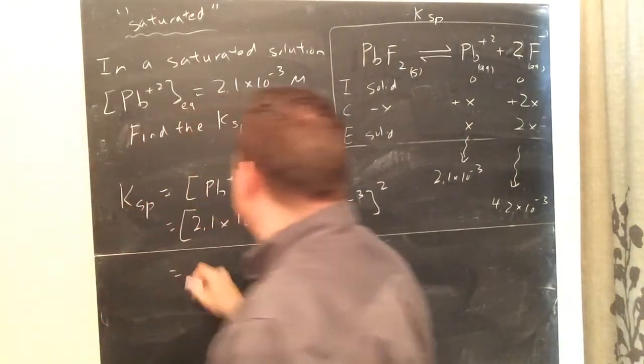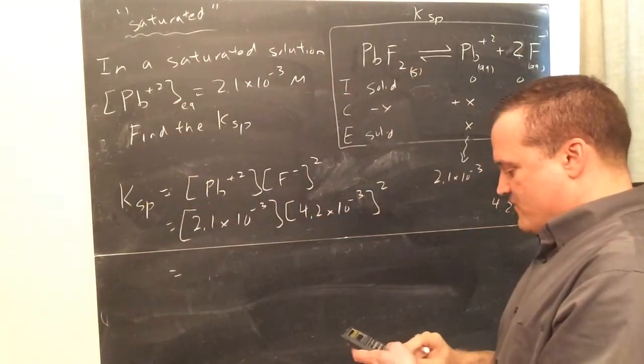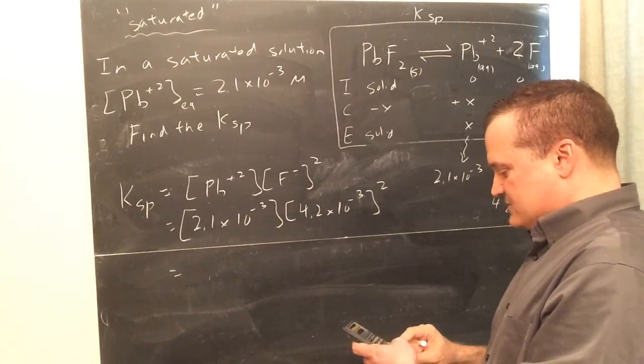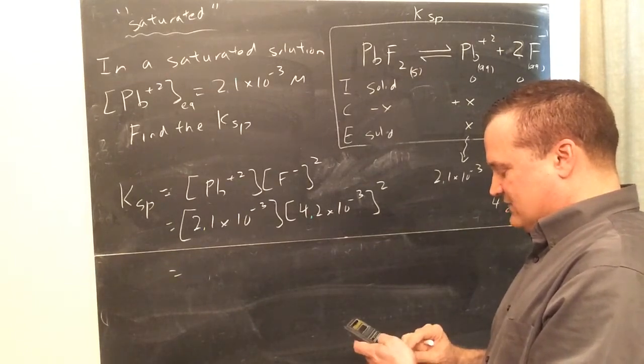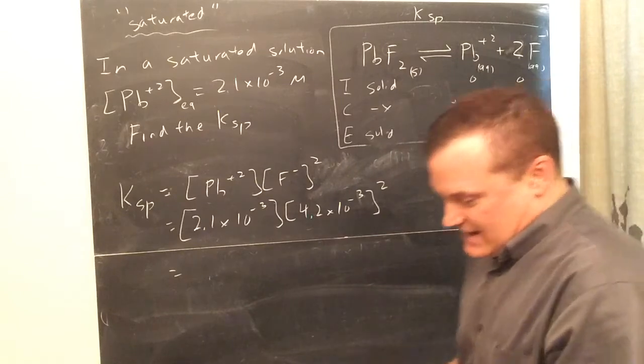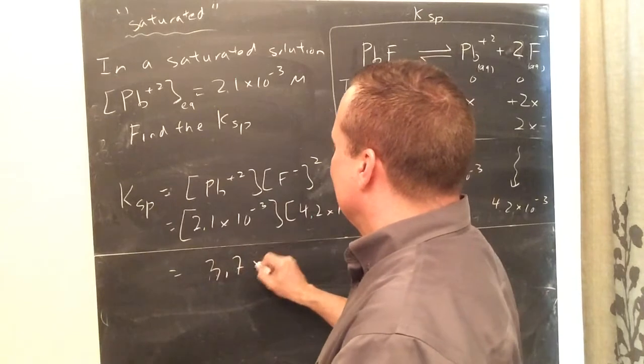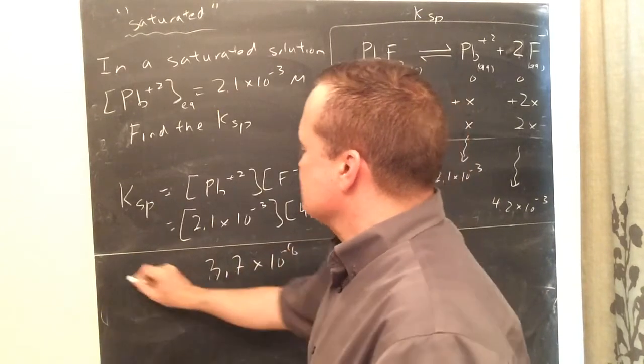And so, then when you calculate that, 4.2×10 to the negative 3, squared times 2.1×10 to the negative, equals, and I get 3.7×10 to the negative 8. Yay! Which it should be, is the KSP.